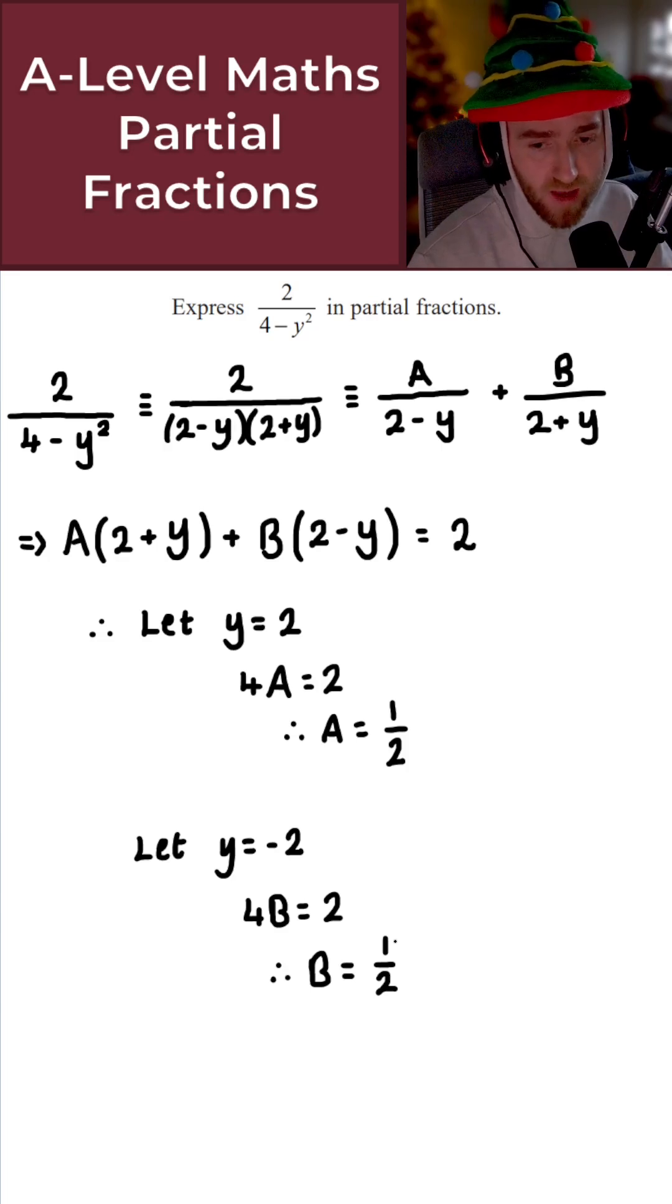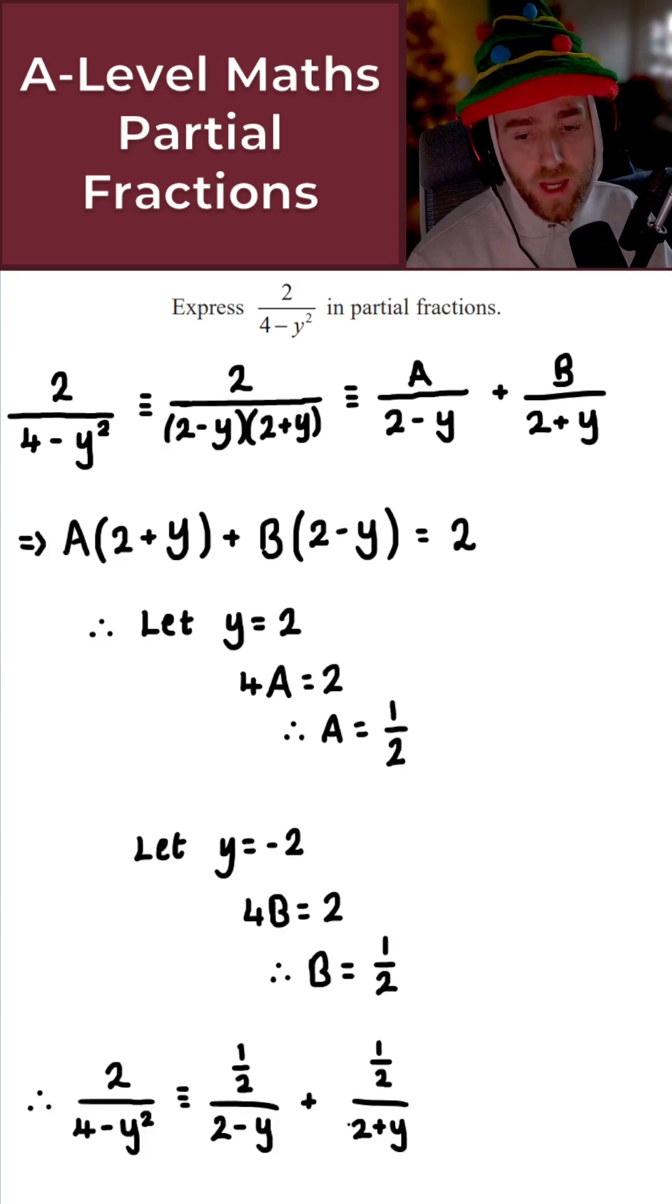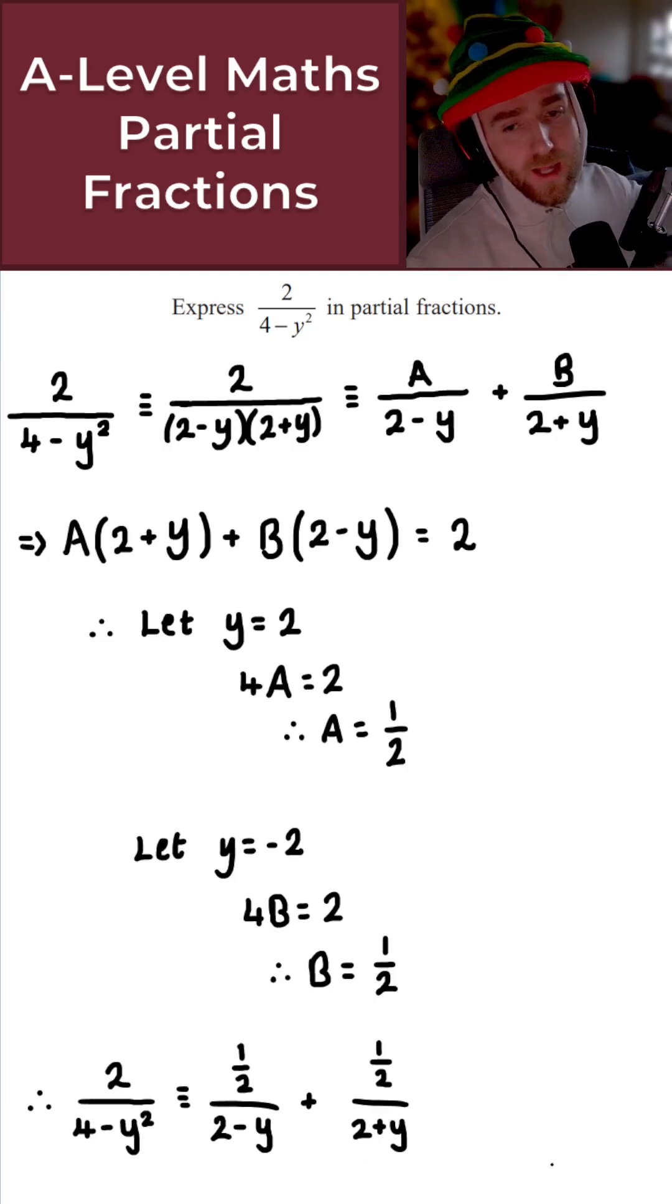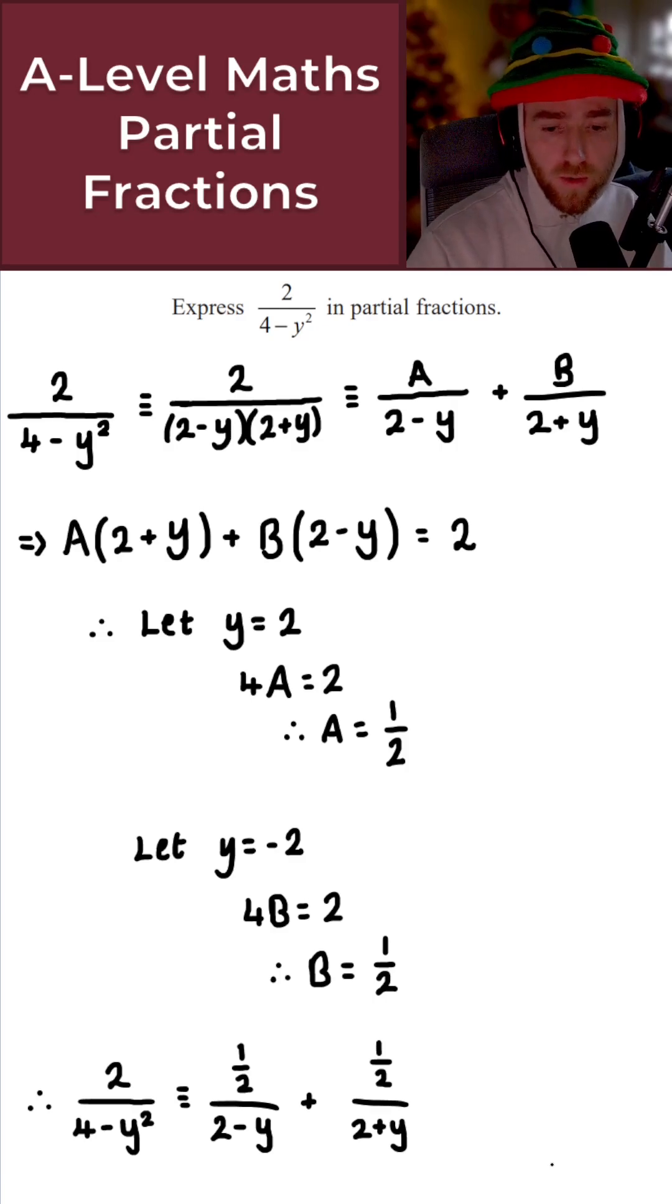So let's put all this together. And if we now put all of that together, we obtain this here. So 2 all over this is equal to 1 over 2 all over 2 minus y plus 1 over 2 all over 2 plus y. There we go. That is the solution to today's question.